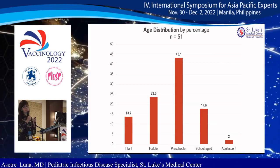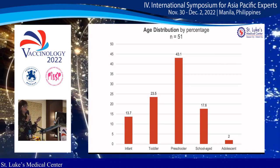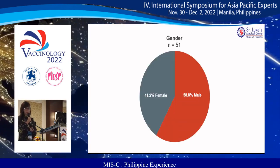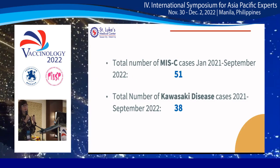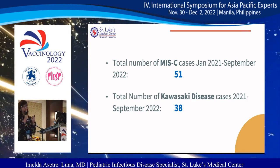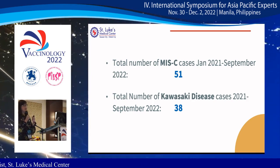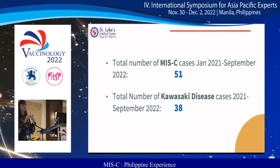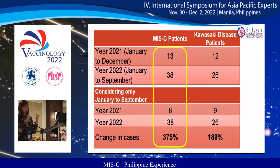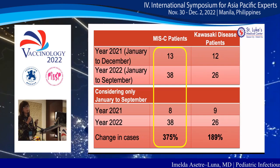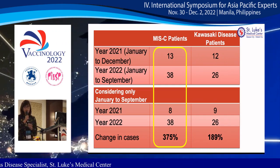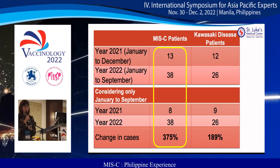Majority of MIS-C cases were from the preschool age group, two to six years old, followed by the toddler and school-age groups. The majority are male. We also noted an increase in Kawasaki disease cases, and there is a well-known overlap between MIS-C and Kawasaki disease clinical manifestations. Comparing January to September this year to last year, there was a 375% increase in MIS-C cases, and at least a 189% increase in Kawasaki disease.